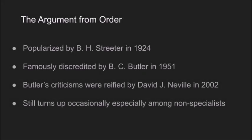One historically significant argument for Markan Priority comes from the pericope order within Mark's Gospel. This argument was popularized by the English scholar B.H. Streeter, and while it was famously shown to be fallacious decades ago, it still turns up from time to time, especially among those scholars who do not specialize in the synoptic problem. As such, it is worth reviewing the argument, as well as its key weaknesses.